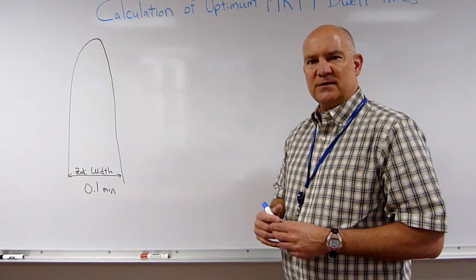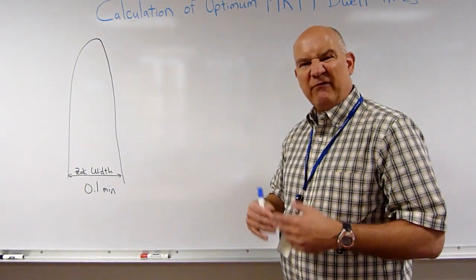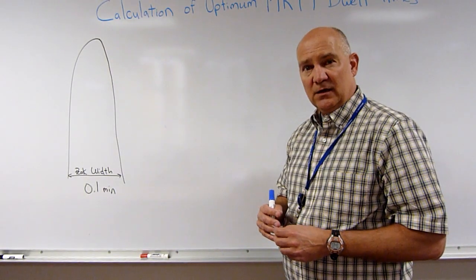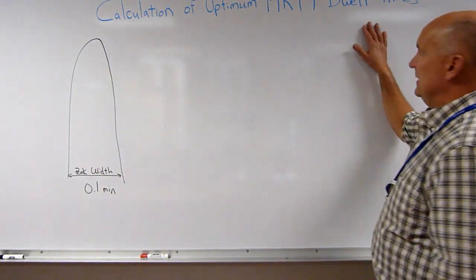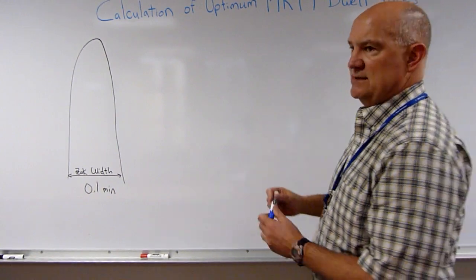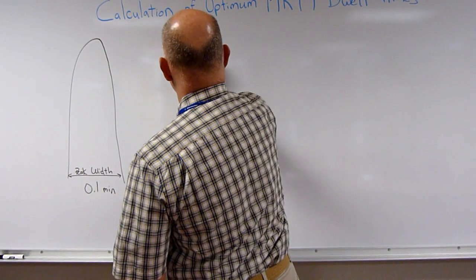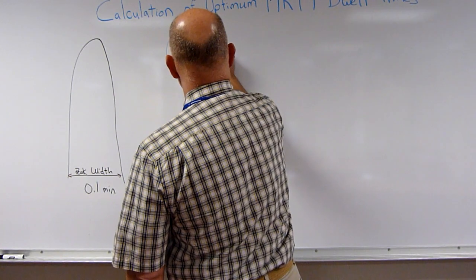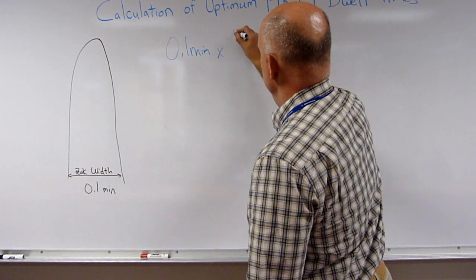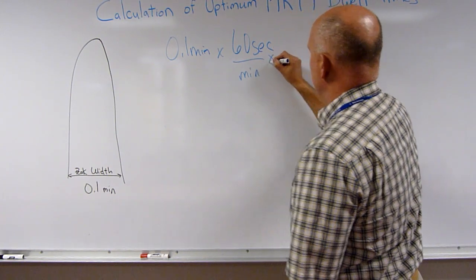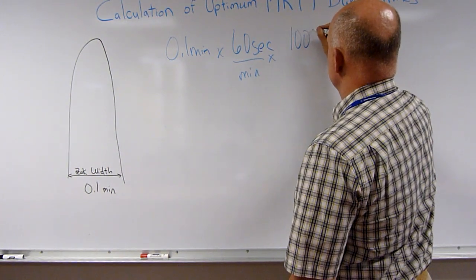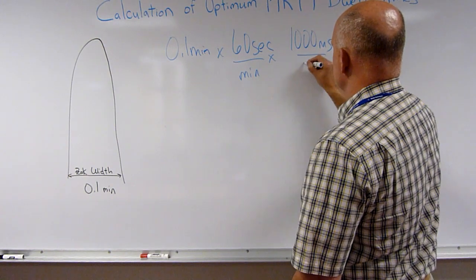Most of our chromatograms on the x-axis have minutes as the axis. If you do, your number will be expressed in minutes. Dwell times are typically expressed in milliseconds. So we must first convert from minutes to milliseconds. So we have 0.1 minutes times 60 seconds per minute times 1000 milliseconds per second.